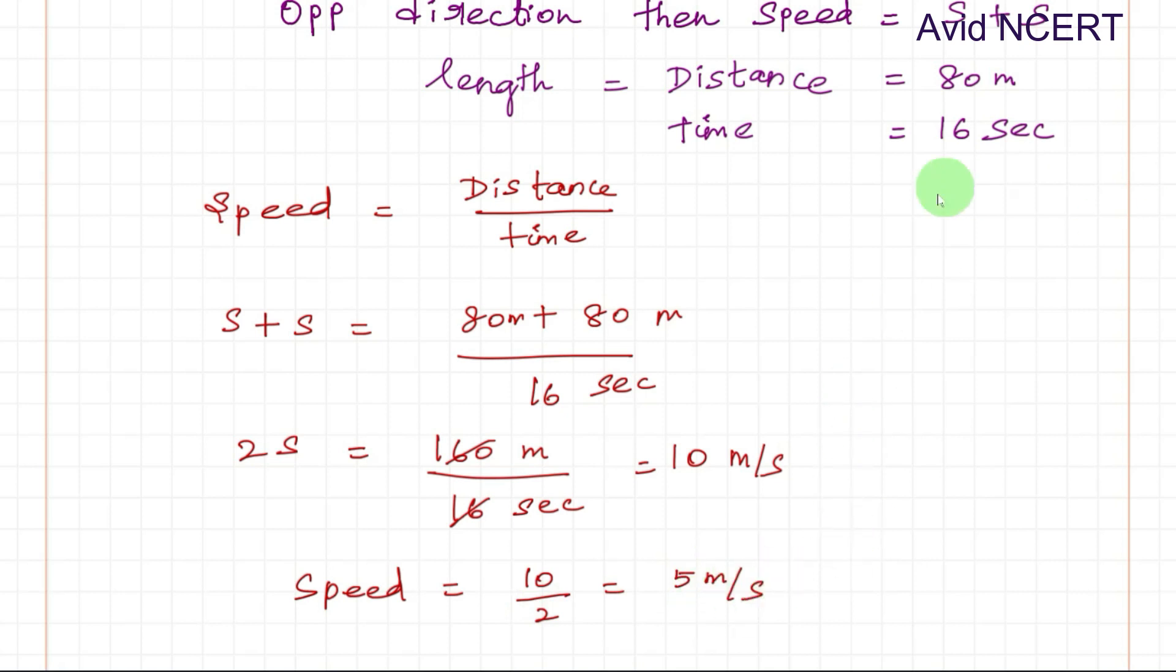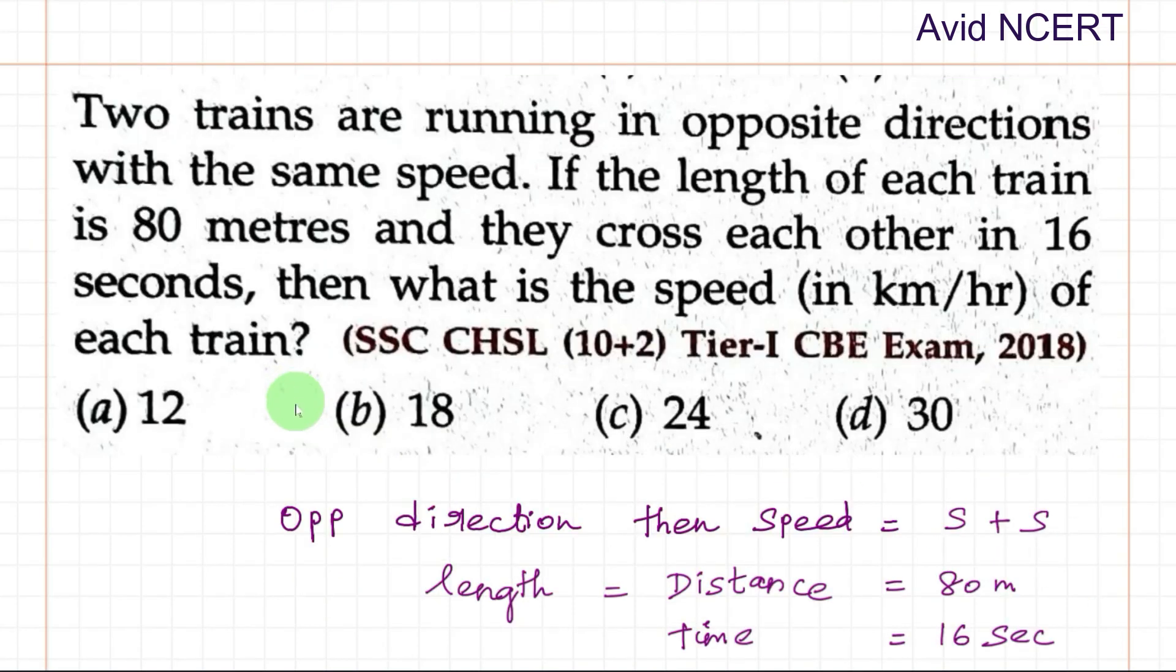Now convert this meter per second to kilometers per hour, multiply by 18 by 5. Therefore, 5 meter per second times 18 by 5, the 5 gets cancelled, which equals 18 kilometers per hour. The speed of each train is 18 kilometers per hour.